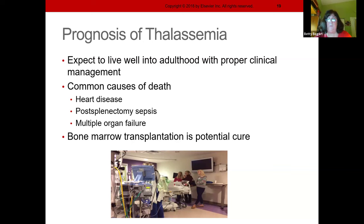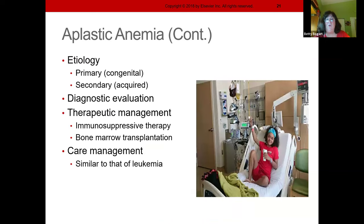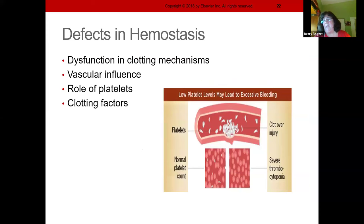Aplastic anemia is pancytopenia — profound anemia with low hemoglobin, low hematocrit, leukopenia meaning they can't fight infection, and thrombocytopenia meaning low platelets, so they're bleeding. They get infections, are anemic, and tired. Treatment includes immunosuppressive therapy to stop the body from destroying cells — similar to chemotherapy approaches used in leukemia — and possibly bone marrow transplant.